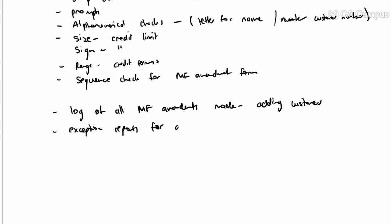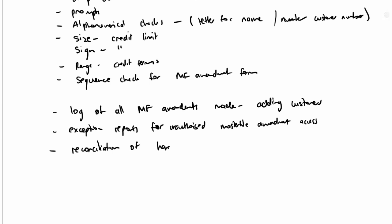Exception reports for unauthorized master file access should also be produced. Additionally, there is still a manual control needed: the reconciliation of the hardcopy master file amendment form to the log of the amendments done, to make sure everything was processed accurately.